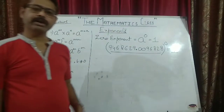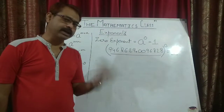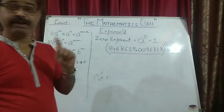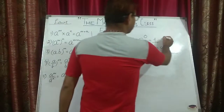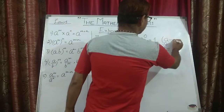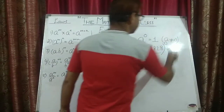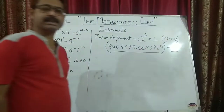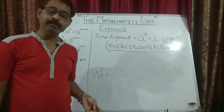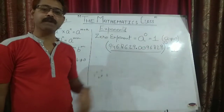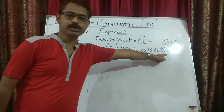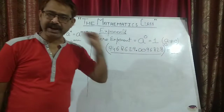It can be any type of number, but the thing is a will never be equal to zero — that has been explained before. So except zero, if there is any number whose power is zero, its value will always be one.